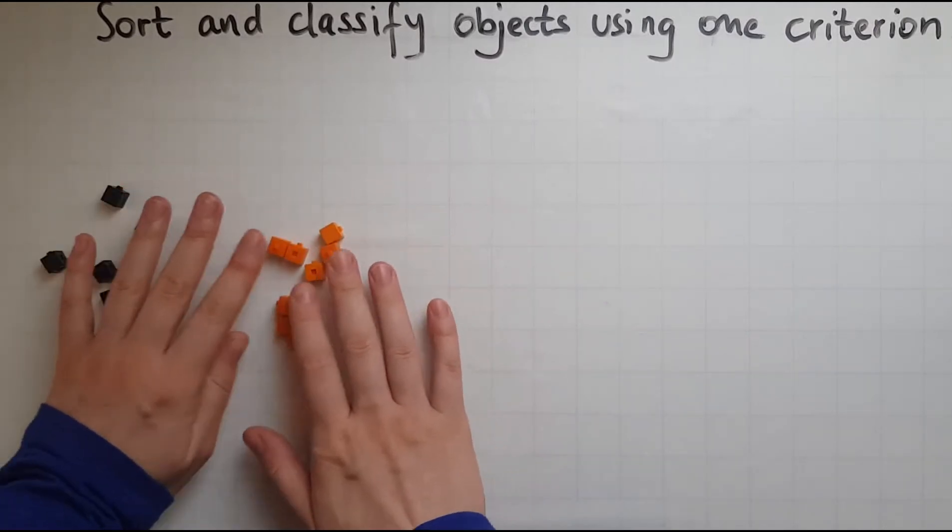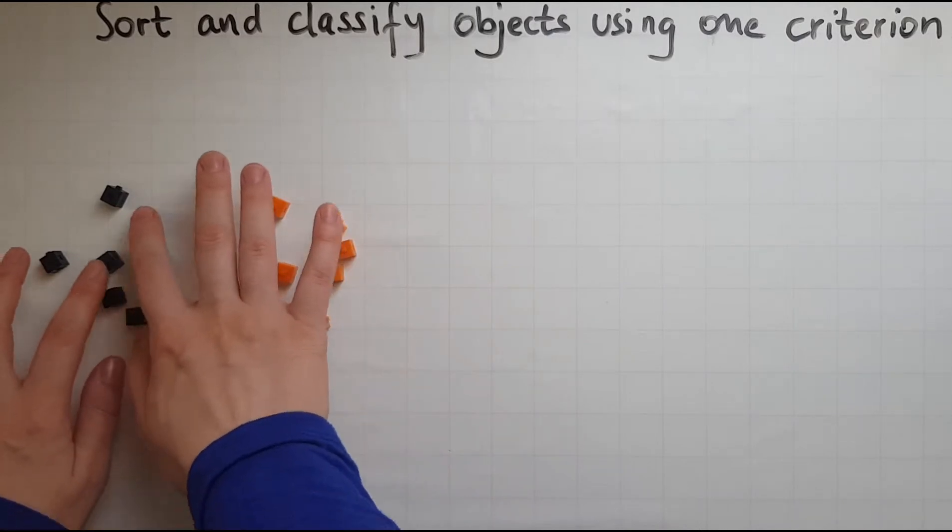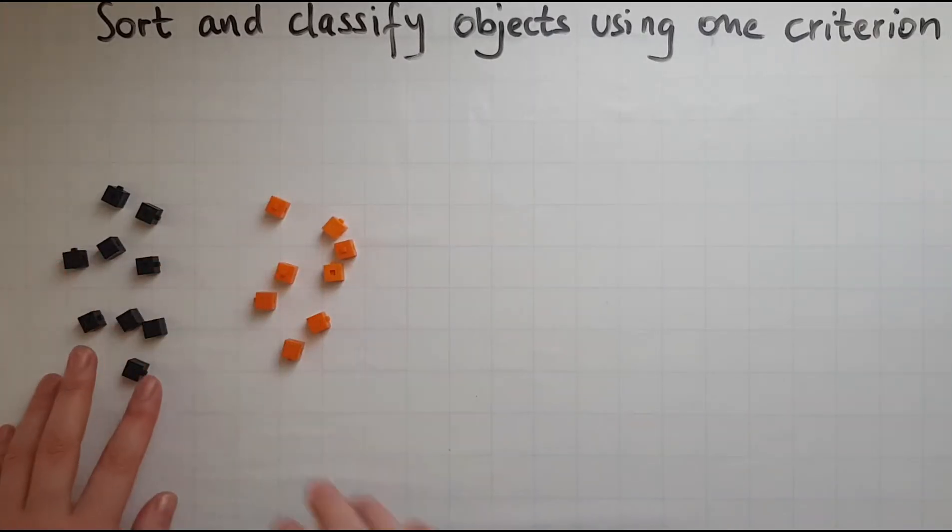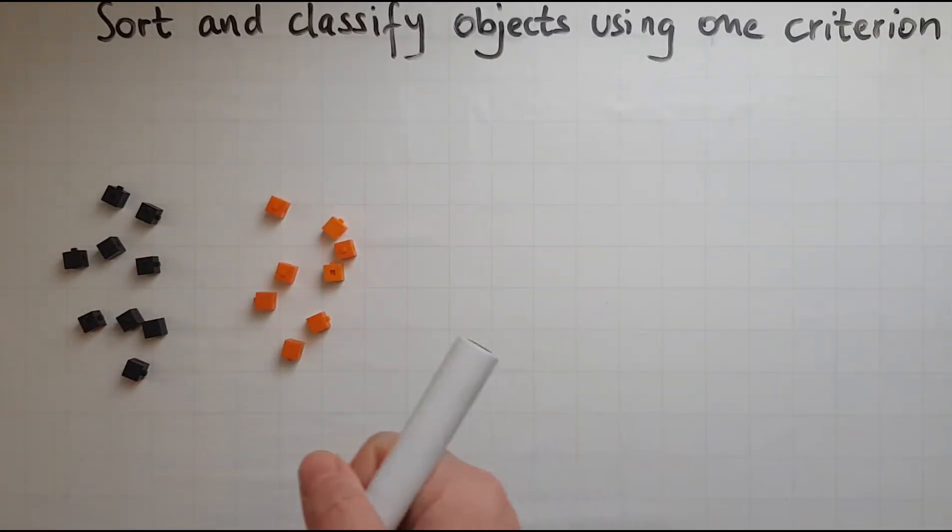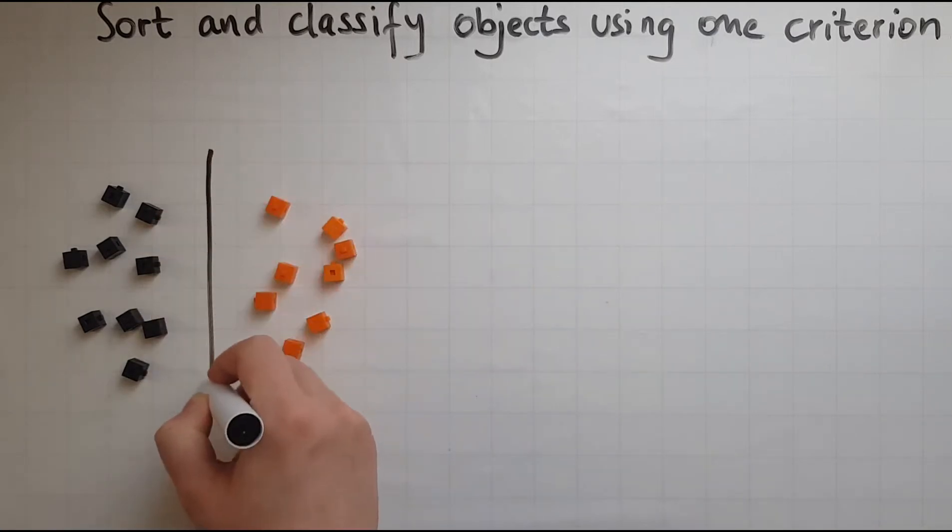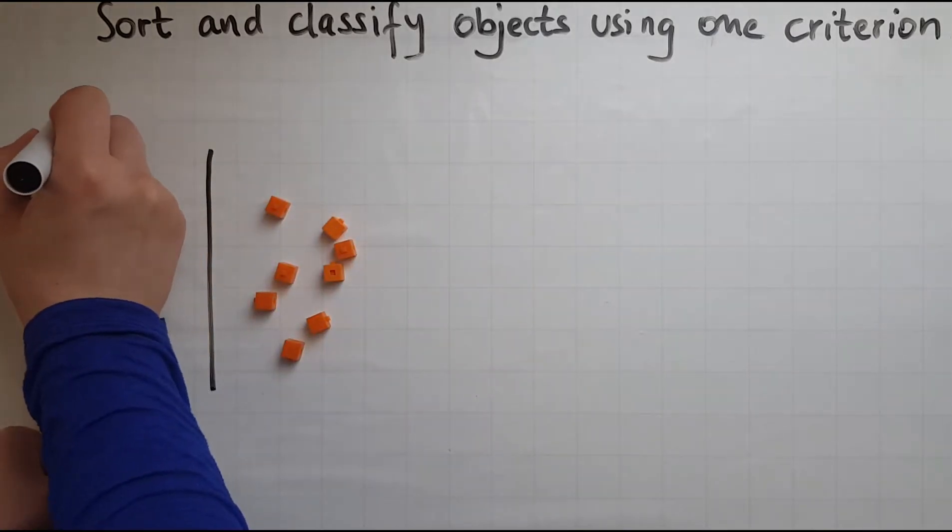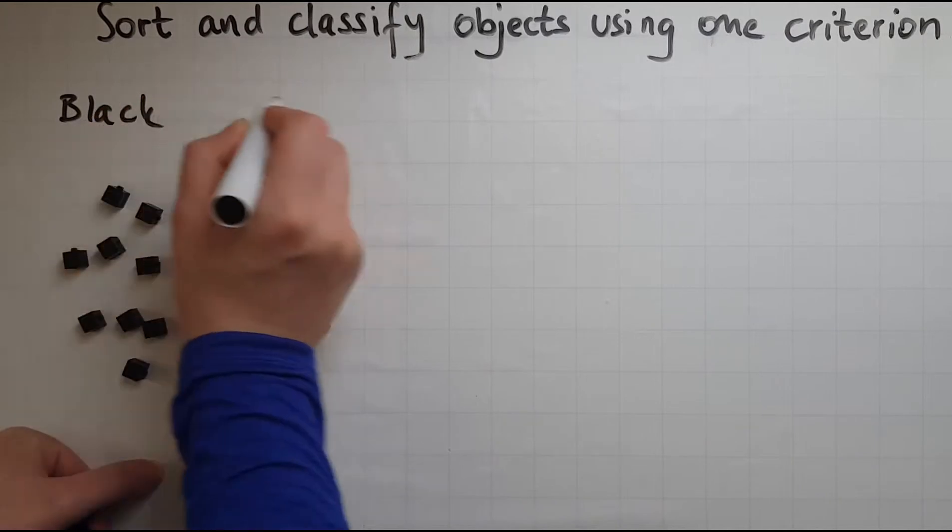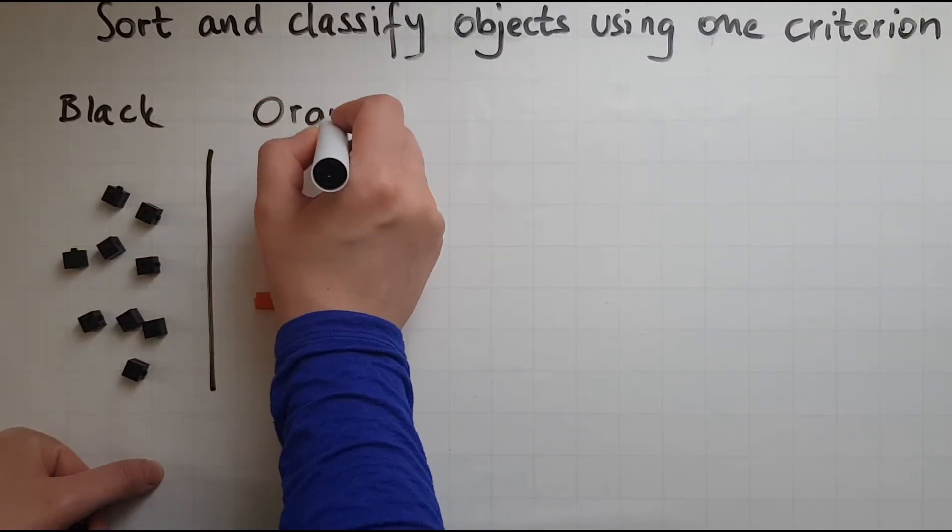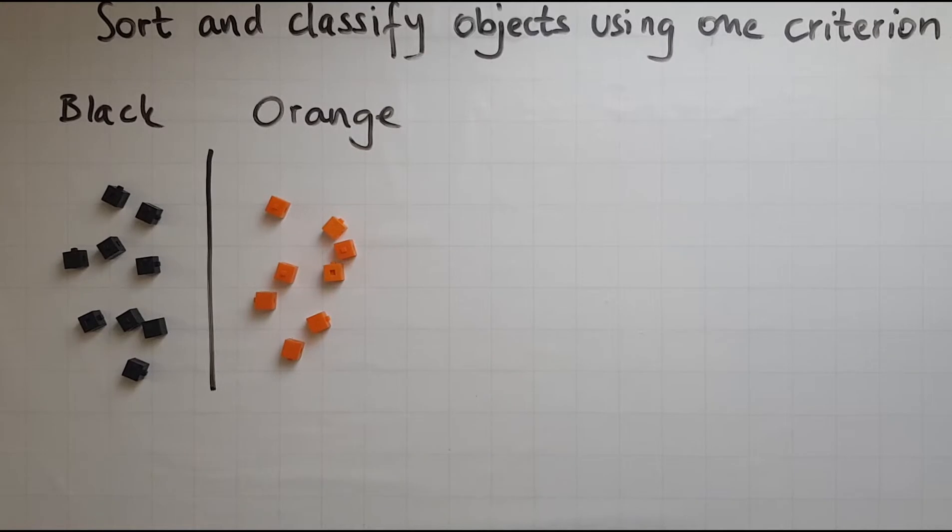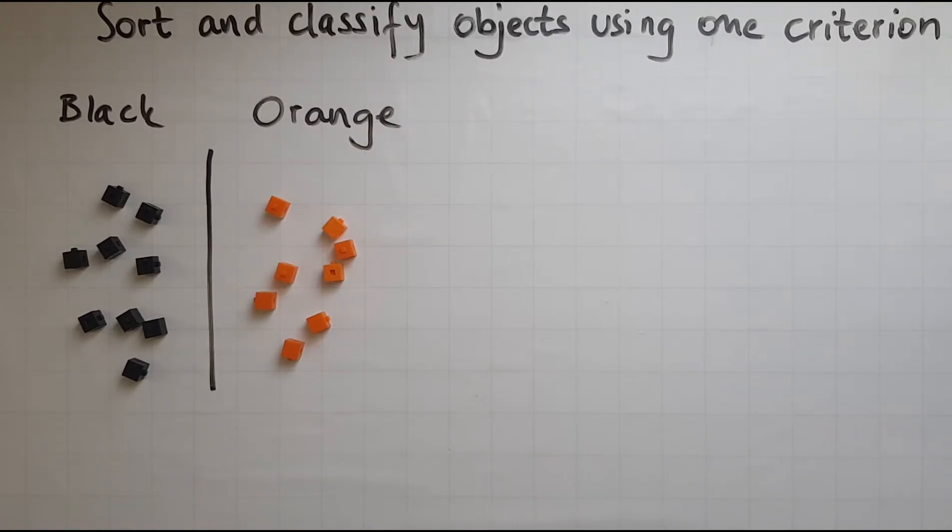So that should be how I sort and classify them. So I can sort them into black and orange. So I looked for what was different between them and that's how I sorted them.